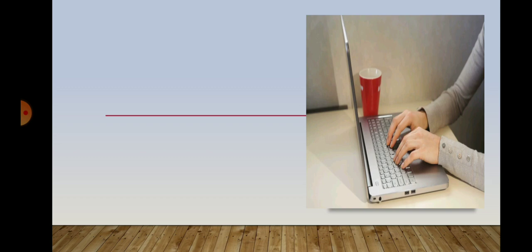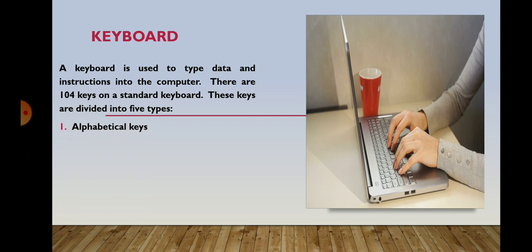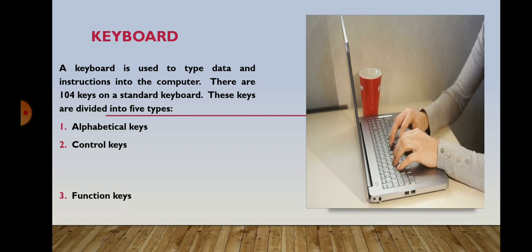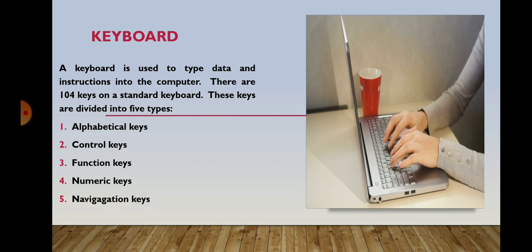The next part is keyboard. A keyboard is a very common — in fact the most common — input device. This device is used to type data and instructions into the computer. There are 104 keys on a standard keyboard. These 104 keys can be classified into five types: alphabetical keys, control keys, function keys, numeric keys, and navigation keys.